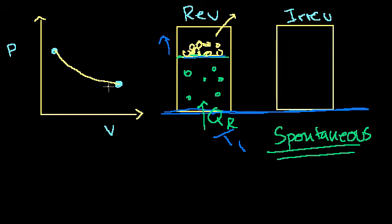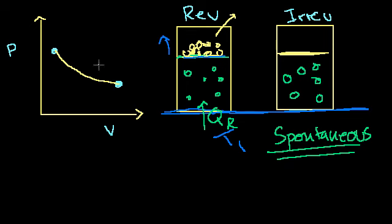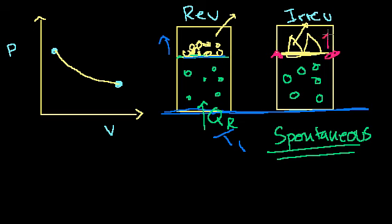Now what about the irreversible process? It looks similar — same gas inside — but to get from that state to that state, instead of moving pebbles one by one, let's say I have big blocks. When I remove one of these big blocks, I go from that state to that state, but it throws everything out of equilibrium, so the in-between state isn't defined. The other key thing in the irreversible process — and every real process in our world is irreversible — is that you're going to have friction. As the piston moves up, it rubs against the side of the container and generates heat of friction.